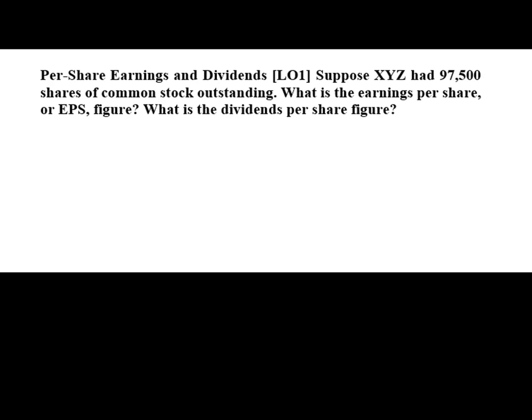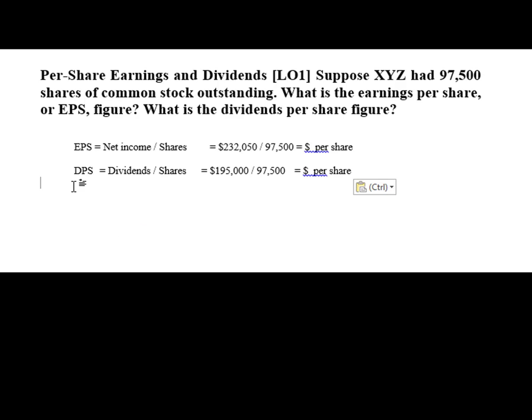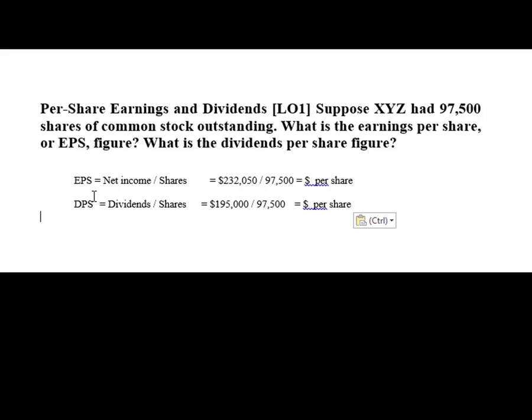Now we're going to look at another calculation: the per share earnings and dividends for this company. Suppose that XYZ had 97,500 shares of common stock outstanding, owned by individuals, companies, mutual funds — whoever owns a share of this company. The question is: what is the earnings per share, or EPS, and what is the dividends per share figure? EPS equals net income over the number of shares, so we have $232,050 over 97,500. The dividends per share is $195,000 divided by 97,500.